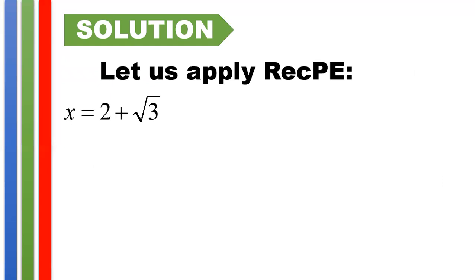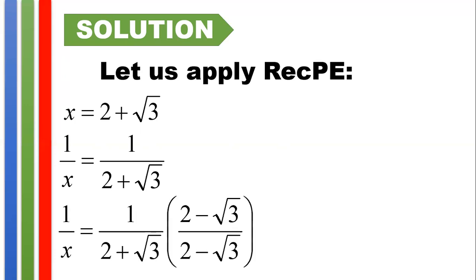So from here, applying the same property, if x is equal to 2 plus square root of 3, by the reciprocal property of equality, we have 1 over x equals 1 over 2 plus square root of 3. Note that the denominator of 2 plus square root of 3 is understood to be 1. That's why its reciprocal is 1 over 2 plus square root of 3. And we could see here that this given denominator is 2 plus square root of 3. We may rationalize this by multiplying both numerator and denominator by 2 minus square root of 3. Note that this is equal to 1. And by multiplying 1 to the given, we did not actually change the value of the number.